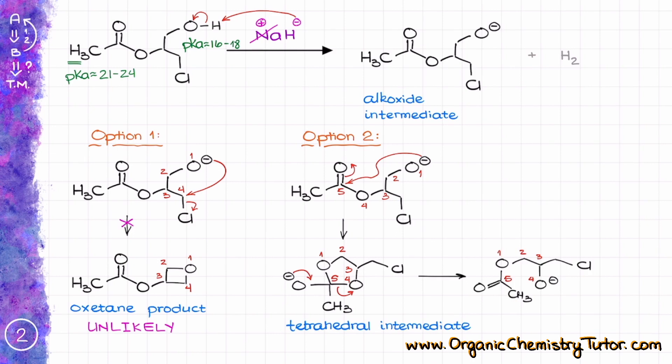And as our tetrahedral intermediate pushes the leaving group out to restore the carbonyl, we break the C-O bond between the atoms four and five. This essentially moves the acyl group from one oxygen of the molecule to another one.